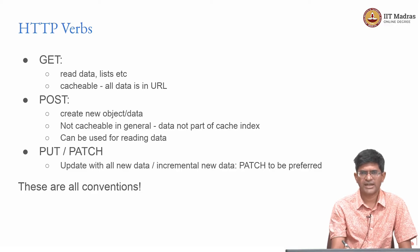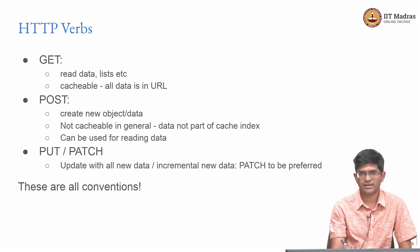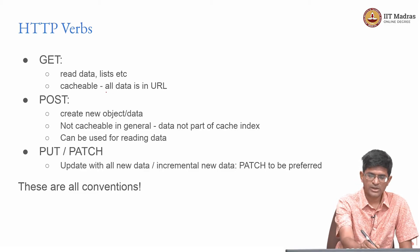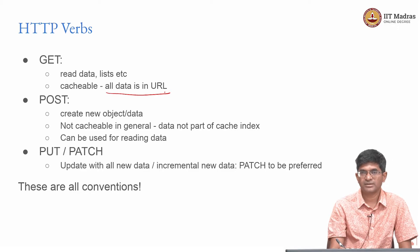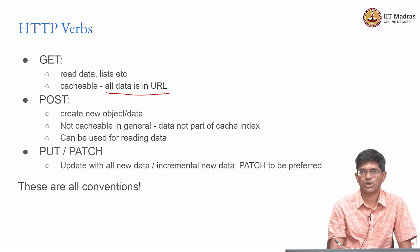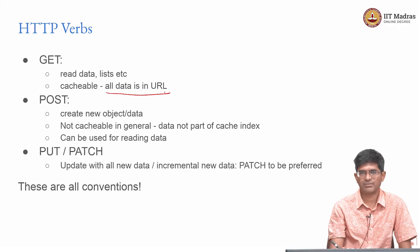The usual idea is that GET is meant for reading data — when you want to read either a list of data or something else, you specify it as part of the query URL. GET fetches all the information and returns it back to you. Because all the data is present in the URL, GET requests are largely cacheable, since a GET request is not supposed to modify the database.